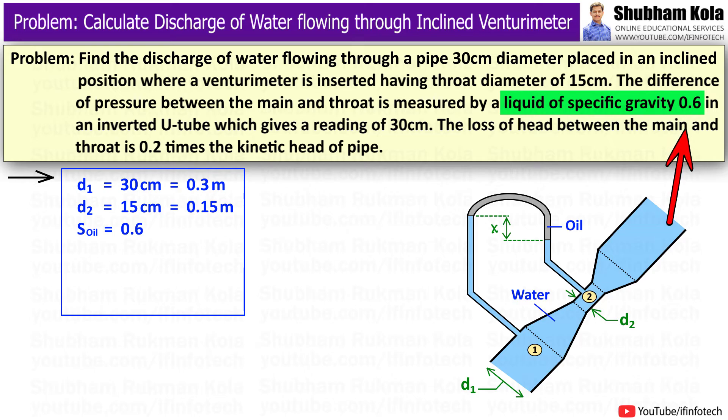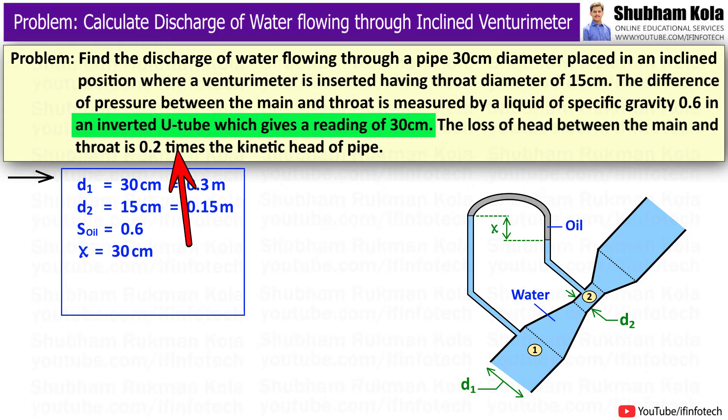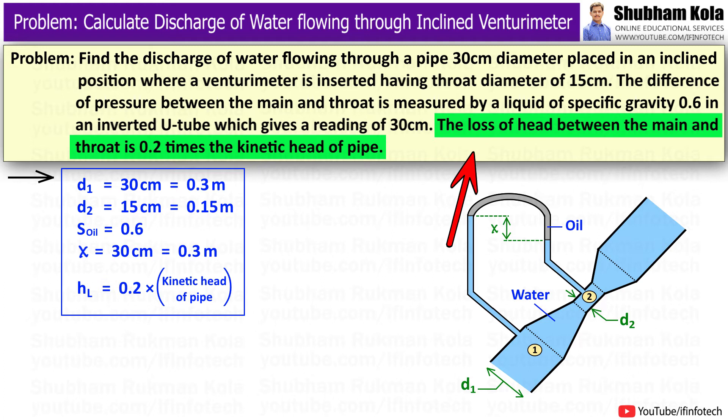The specific gravity of manometric liquid, which is oil, is 0.6. The inverted U-tube manometer gives reading of 30 cm, so x equals 0.3 m. Loss of head between the main and throat is 0.2 times the kinetic head of pipe, which is v1 squared upon 2g.